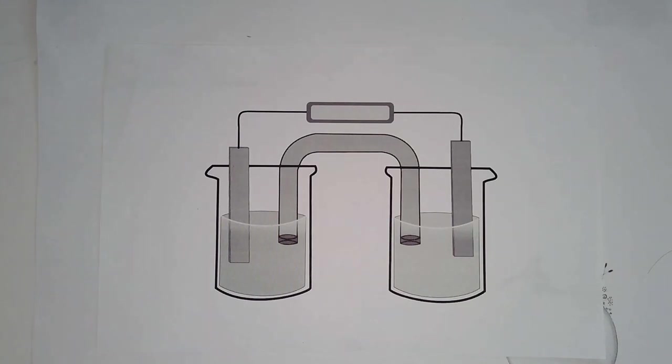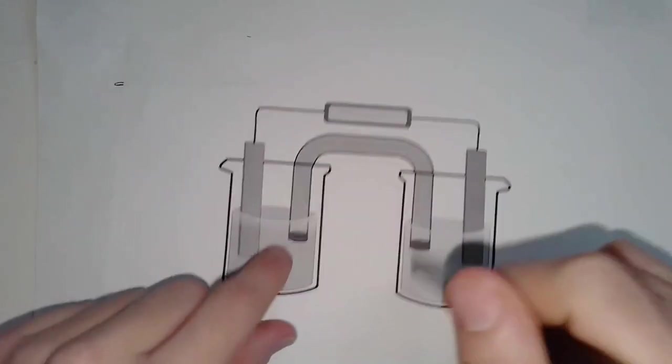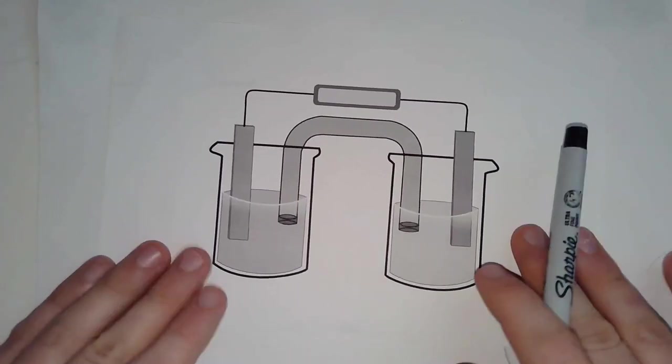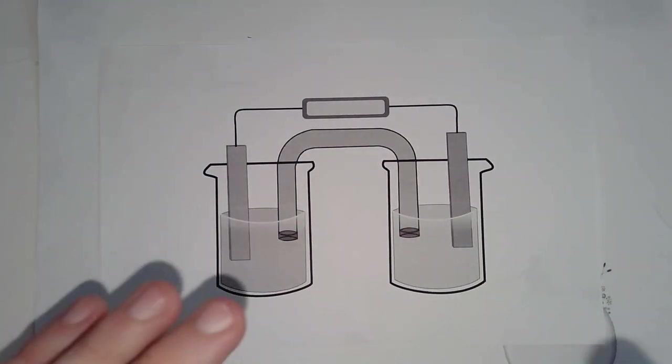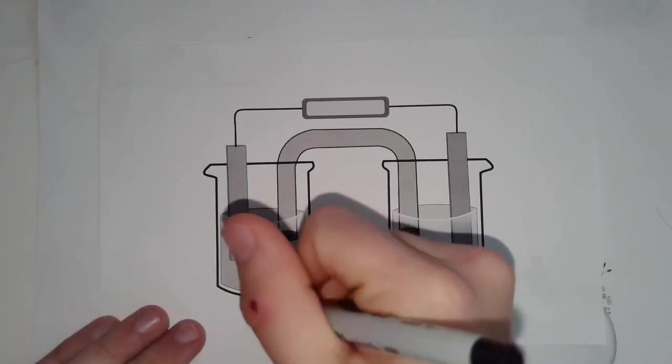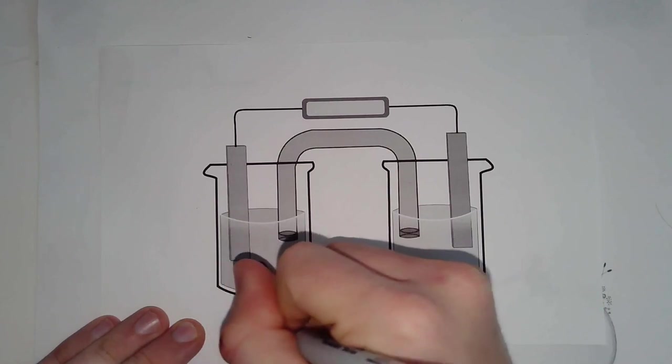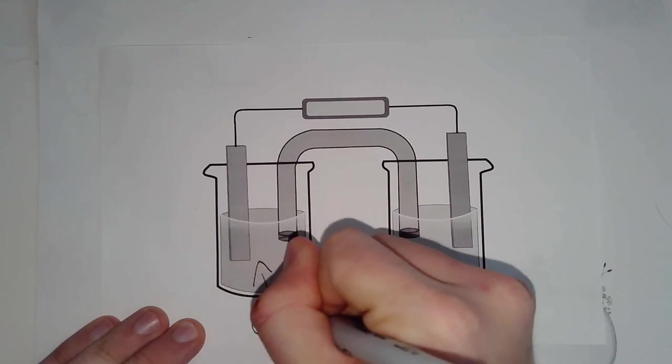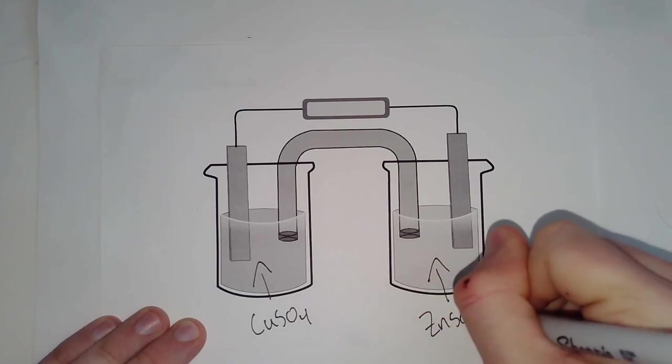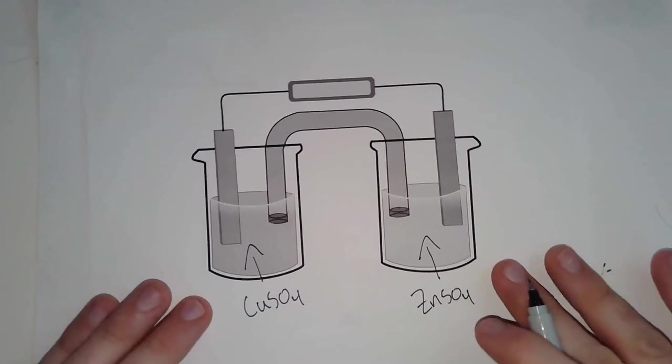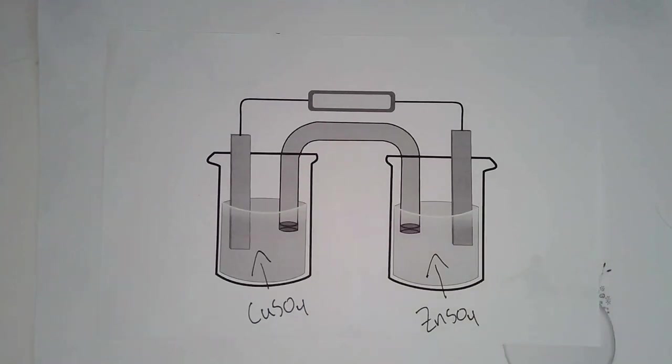So we're going to start off with these two beakers here. And into each beaker, we're going to add water and a salt to make a solution. And let's go ahead and label these up. Let's call this one here copper sulfate, CuSO4. And for this one, let's put zinc sulfate in. And the reason why we're using those two is they're going to help our battery form. Fair enough.